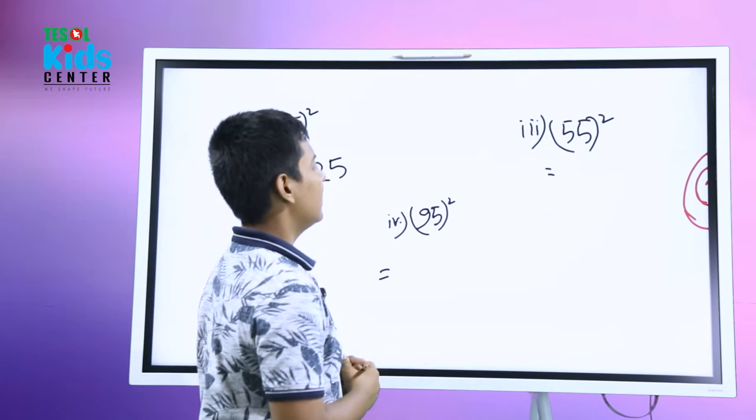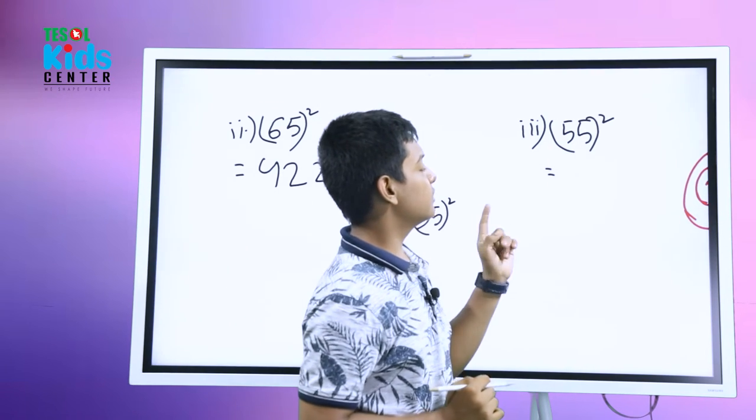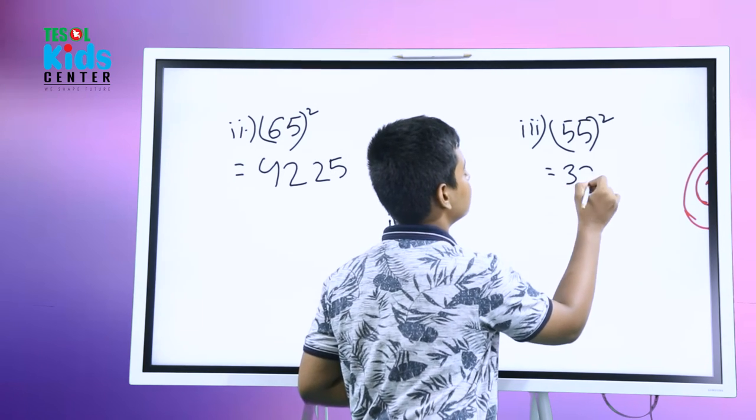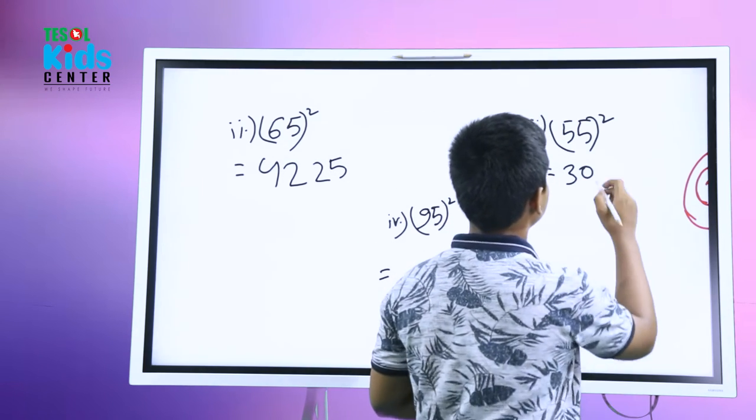Like this, very simple. And then 55: five's next number is six, so five sixes are 30, and five into five equals 25.